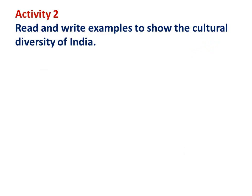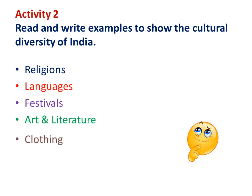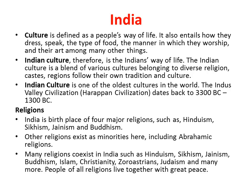Here is Activity 2. Here are the facts we highlighted from the image. Let's read the given text on India and find examples for each. You need to copy down the list in your writing book. The categories are: religions, languages, festivals, art and literature, clothing, and food. Let's start reading. While reading, you can write the examples for each fact.